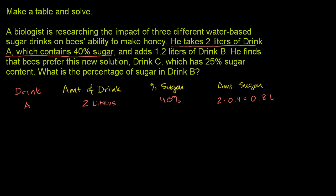Now, he adds 1.2 liters of Drink B. So Drink B, he adds 1.2 liters. He finds that bees prefer this new solution, Drink C. So when you add these two together, you end up with Drink C.